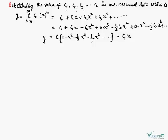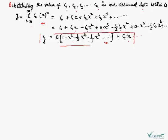By putting all values of c₀, c₁, c₂, c₃, c₄, ... into our assumed solution y = Σ(n=0 to ∞) cₙxⁿ, expanding as y = c₀ + c₁x + c₂x² + c₃x³ + c₄x⁴ + ..., and substituting c₂ = -c₀, c₃ = 0, c₄ = -c₀/3, we group terms by c₀ and c₁. This gives the required solution of the given differential equation.